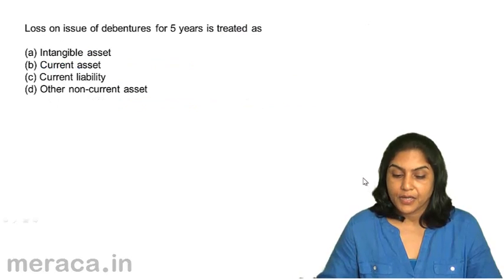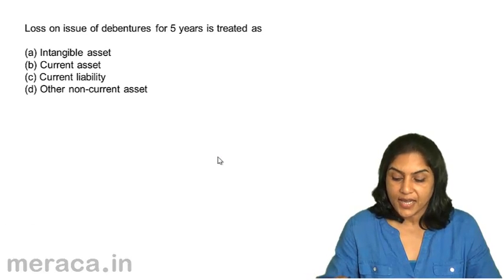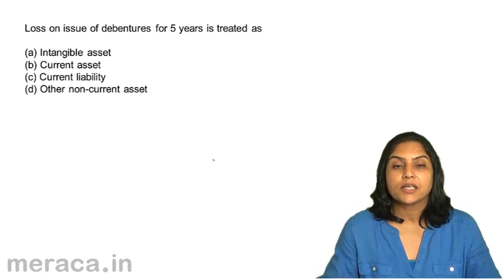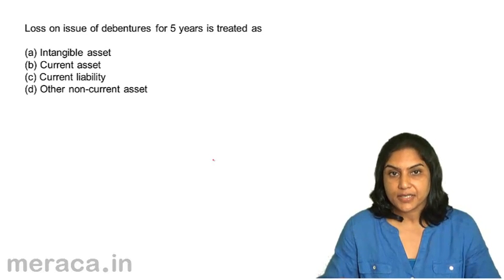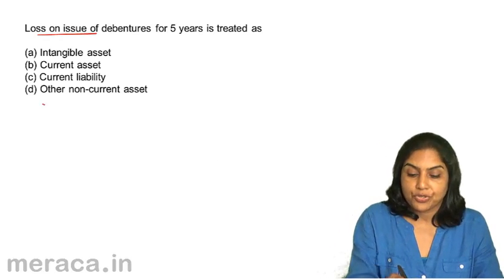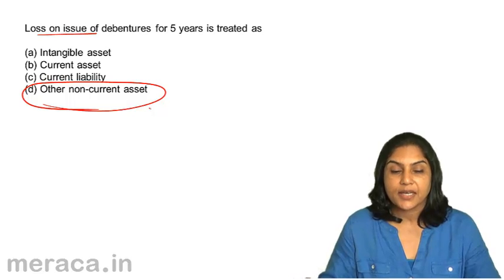Next, loss on issue of debentures for five years is treated as: A. An intangible asset, B. Current asset, C. Current liability, D. Other non-current asset. Loss on issue should be treated as other non-current asset. The correct answer is D.